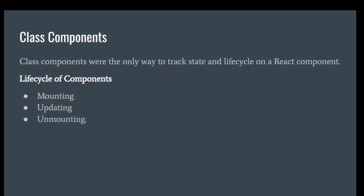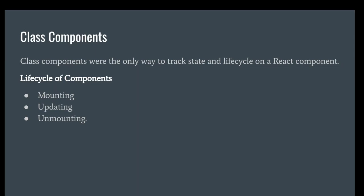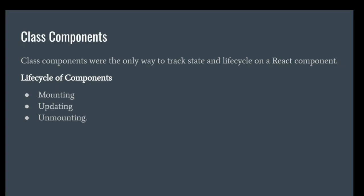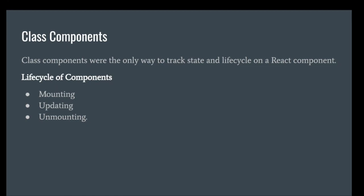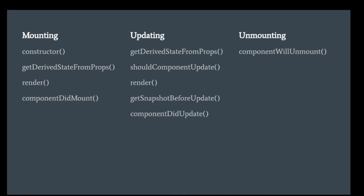Unmounting is when you switch from one page to another — at that time the previous page unmounts. Or if you close the page, your current application is unmounted from the browser. These are the three lifecycle phases of components, and each lifecycle has its own methods to help you handle functionality. Let me show what methods are available for each cycle.